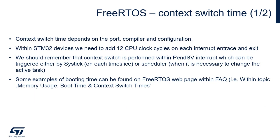Let's have a closer look at context switch time and how long it takes. Context switch time depends on the port — the architecture we are running the operating system on — the compiler used, and the configuration. Within STM32 devices, we need to add 12 CPU clock cycles on each interrupt entrance and exit, which is a significant contributor to switching time, as we use at least one interrupt — PendSV — and sometimes an additional SysTick. Context switch is performed within PendSV, triggered either by SysTick on each time slice or by the scheduler when it is necessary to change the active task. Examples of timing can be found on the FreeRTOS web page within FAQs, under the topic of memory usage, boot time, and context switch times.